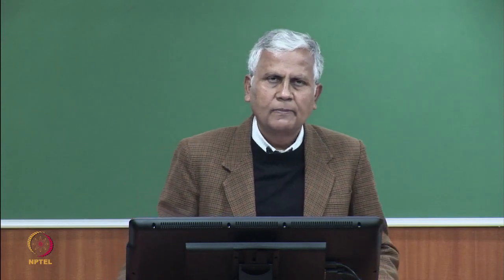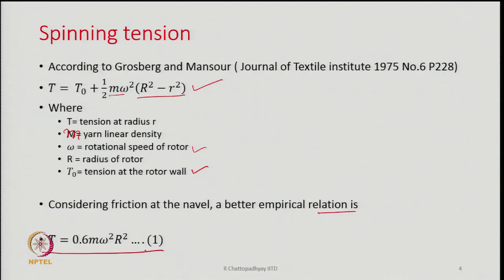The yarn is in contact with the navel or trumpet of the rotor, experiencing pressure and being withdrawn simultaneously. There is friction at this contact point, and the frictional resistance adds to the tension. It has been shown that a better empirical relationship could be T = 0.6·m·ω²·R².